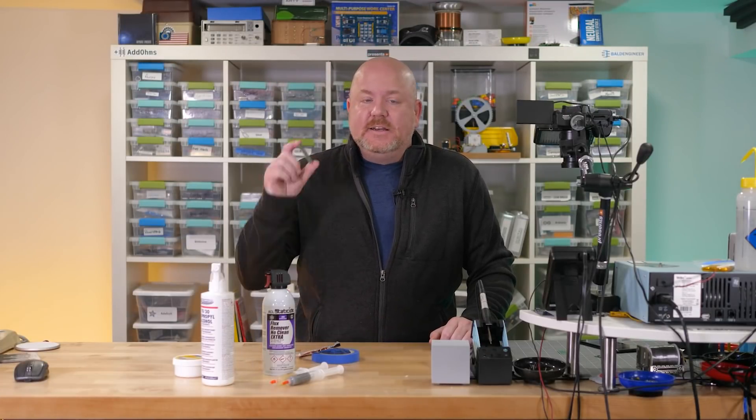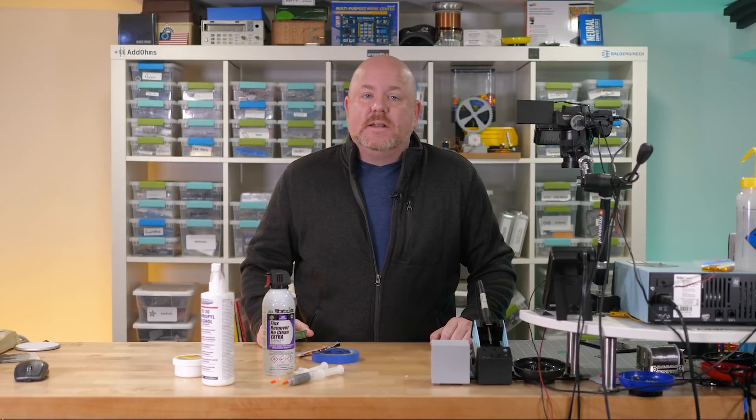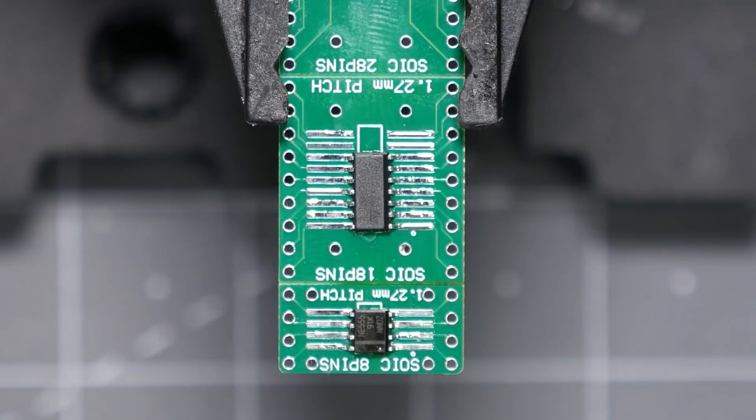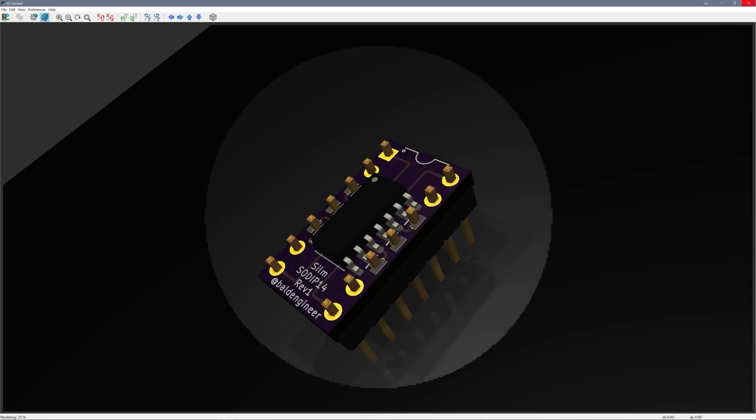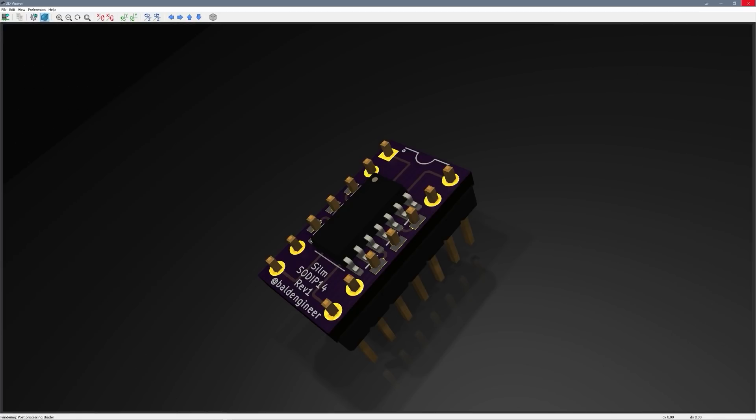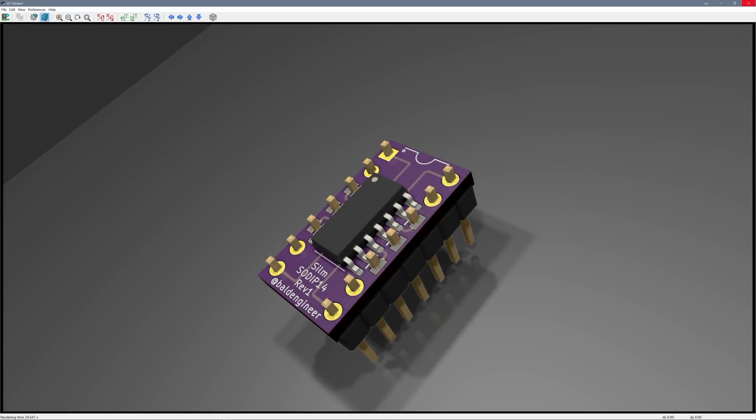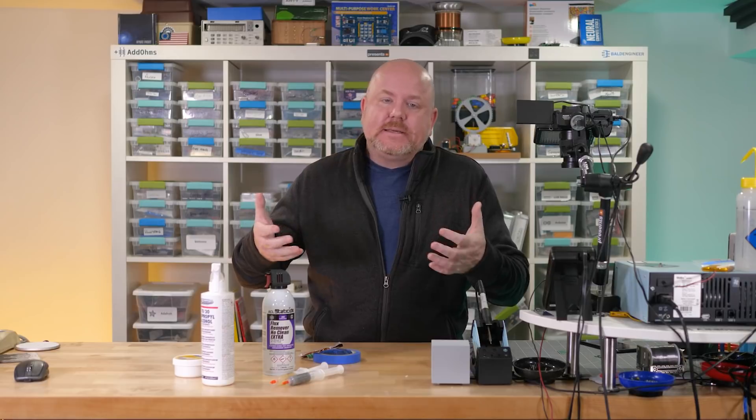Number five, adapter boards. As through hole parts get harder to find, adapter boards like these can be very helpful to have on hand. They are also a great way to practice surface mount soldering. Also, also, designing your own could be a great way to practice using a PCB design tool like Altium, or my favorite, KiCad, or KiCad.